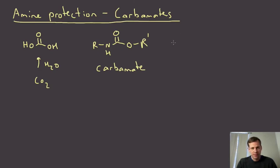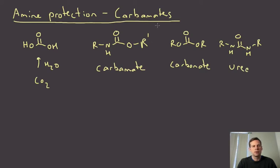Incidentally, if we had the diester of carbonic acid, this would be a carbonate. And if we had the diamide of carbonic acid, where both sides have amide pieces, that's known as a urea.